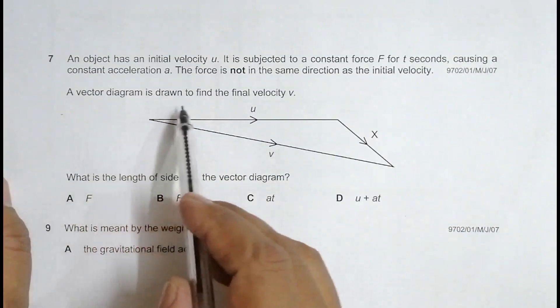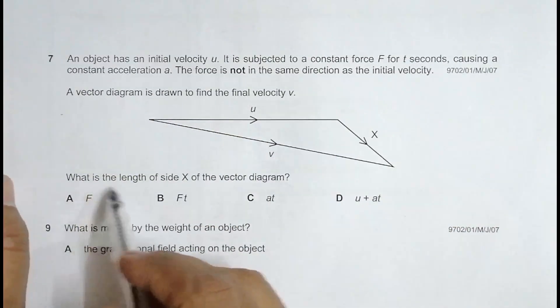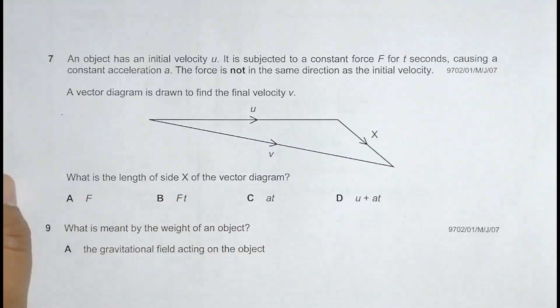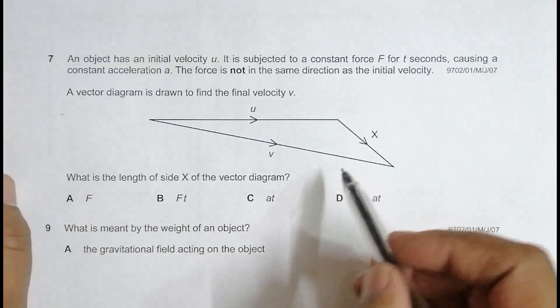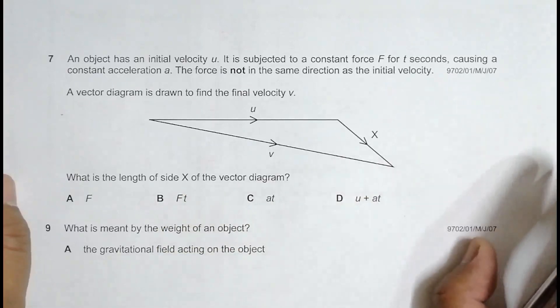So, a vector diagram is drawn to find the final velocity V, so this is V. What is the length of the side X of the vector diagram? So when you drew a vector diagram, the velocity V is given in this manner. So it asks us to find the length of X of the vector diagram.